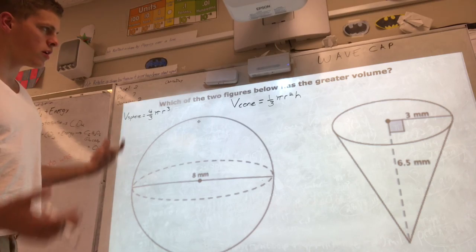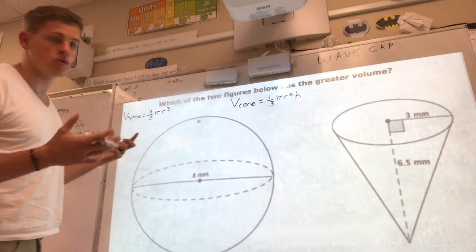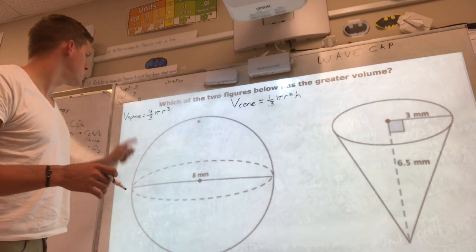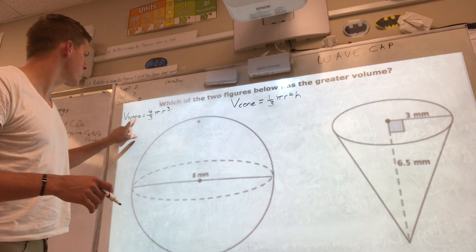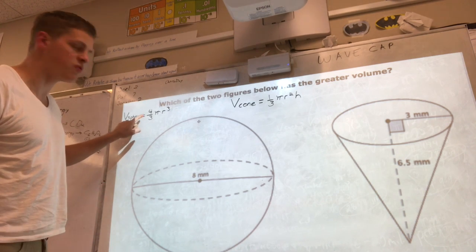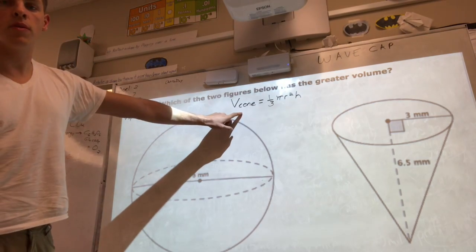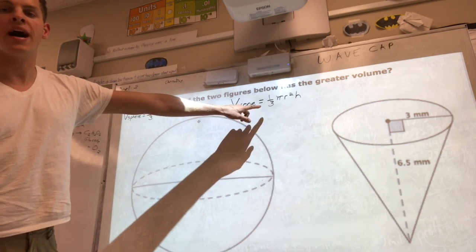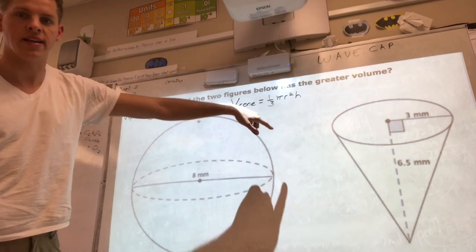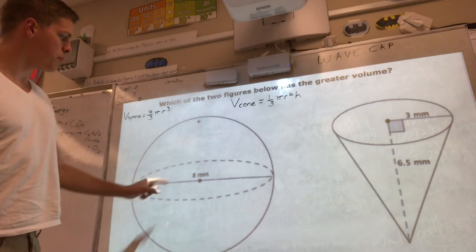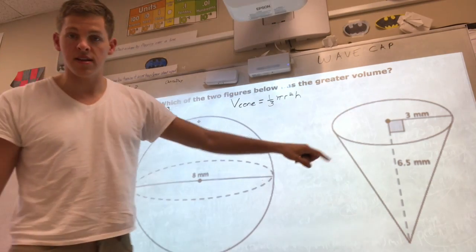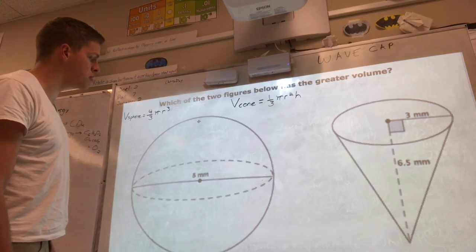So first the question is asking which has a greater volume? So our two volume equations are volume of a sphere is 4/3 pi r cubed, and then the volume of a cone is 1/3 pi r squared times height. So we're gonna take the numbers that they give us and let's see if we have enough information to make a conclusion.